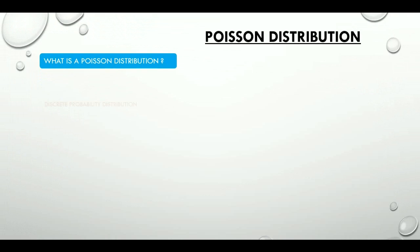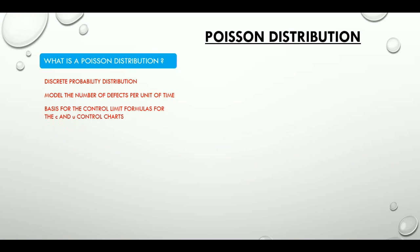A Poisson distribution is a discrete probability distribution that expresses the probability of a given number of events occurring in a fixed interval of time. It is the basis for the control limit formulas for the C and U control charts.